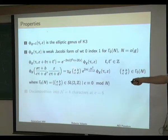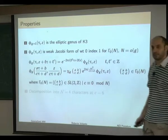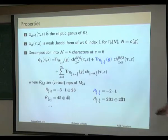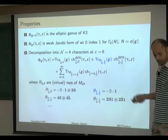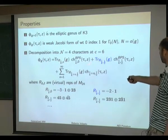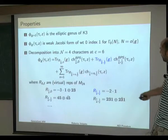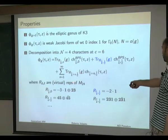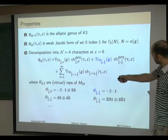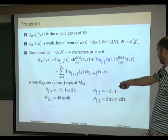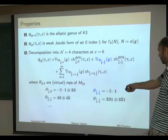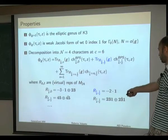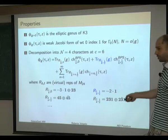In some cases one needs to introduce a non-trivial multiplier in these modular properties. A third interesting property arises if we consider a decomposition into N=4 characters: we can decompose all these functions into characters of the N=4 algebra. The coefficients in front of these characters are characters of representations of M24. For BPS representations we have characters of virtual representations of M24; for all massive N=4 representations we have actual non-virtual representations of M24.